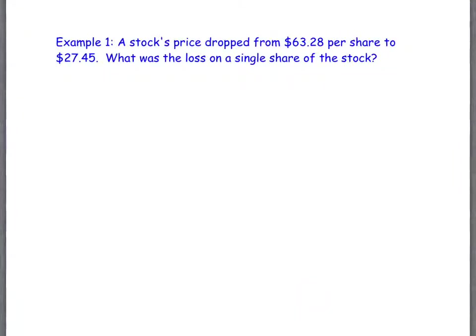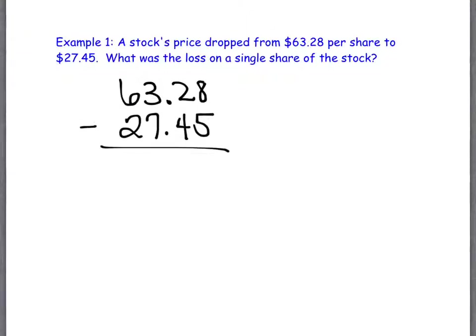Here's an example using decimals in context. A stock price dropped from $63.28 per share to $27.45 per share. What was the loss on a single share? This is a subtraction problem. We line up the decimal point and subtract component-wise, starting on the right-hand side: 8 minus 5 is 3. Then we run into a problem because 2 minus 4 doesn't work.